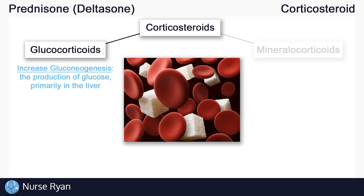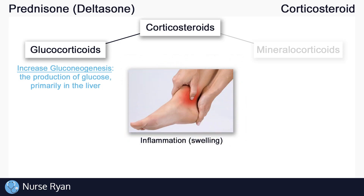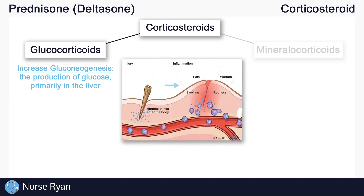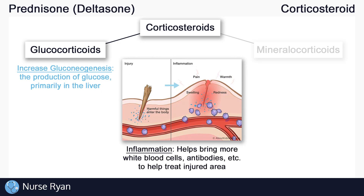Glucocorticoids are also important in the immune system by influencing inflammation. Think about whenever you've had some kind of injury like a cut, a sprained ankle, maybe an infection — you've probably seen swelling or inflammation in and around the affected area. Inflammation happens when there is damage to the cells in your body. Inflammation is actually a protective response from your immune system, even if it is at times painful. It helps bring more white blood cells, antibodies, and other helpful things to the affected area to help treat the problem.